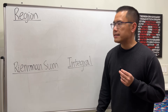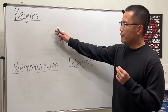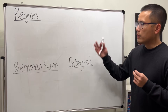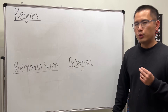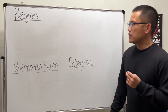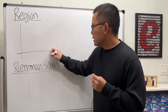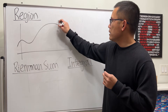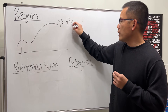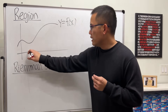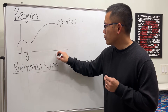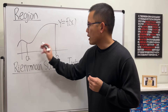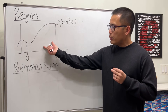My goal for this video is to help you understand when we have a region, how can we write a limit of a Riemann sum and an integral to describe the area of the region. Let's have a look. Say we have a function y equals f of x, and we want to go from a to b — this right here is the region that we want to find the area of.